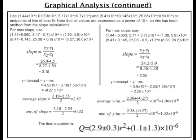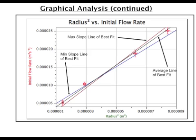Here are some more of the sample calculations. The product of this section should be an equation relating the independent and dependent variables. Don't forget to include the appropriate power on the independent variable — in this case, squared. Finally, you must include a graph that shows the maximum and minimum lines of best fit.